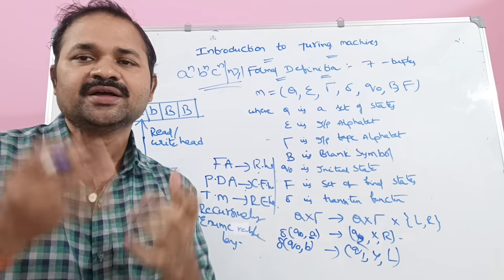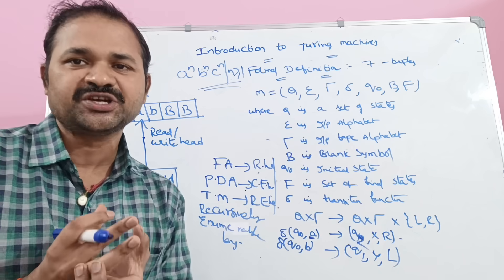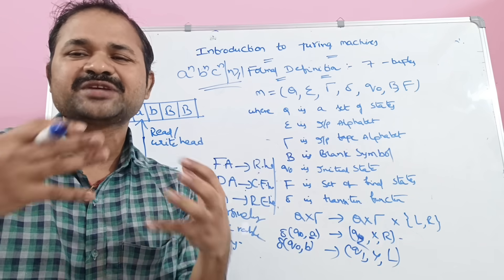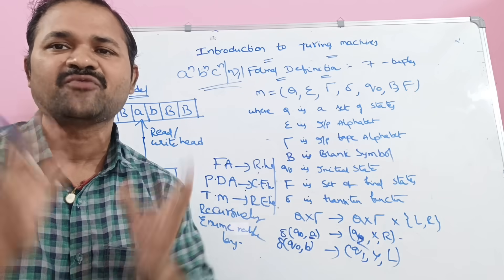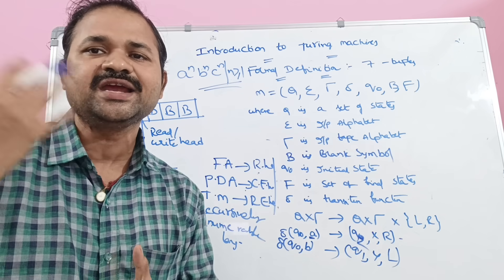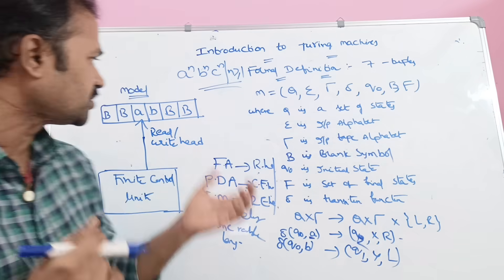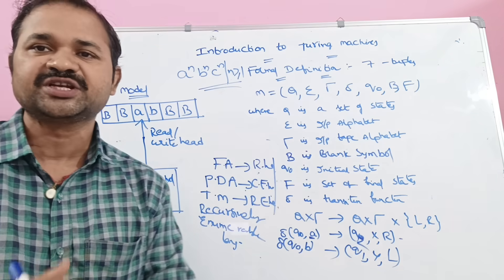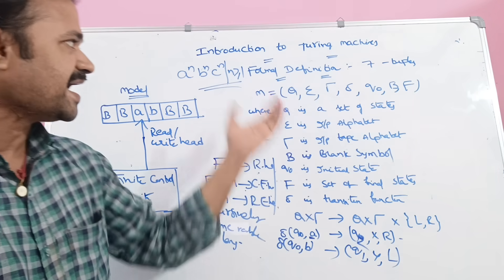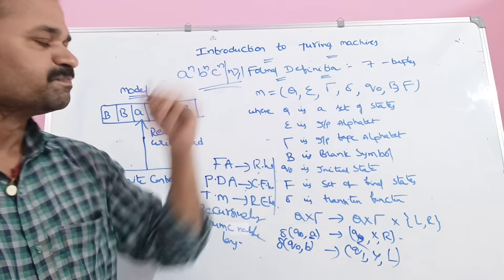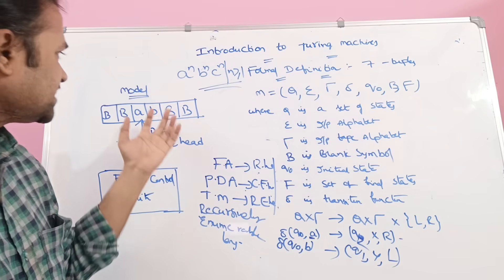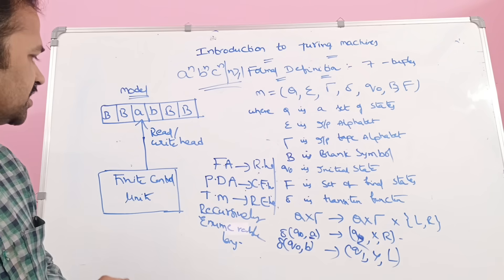A Turing machine is a complex machine. By using a Turing machine we can accept any sort of language, any type of language. In this video we are mainly discussing the model of the Turing machine, the basic diagram of the Turing machine, as well as the formal definition of the Turing machine.